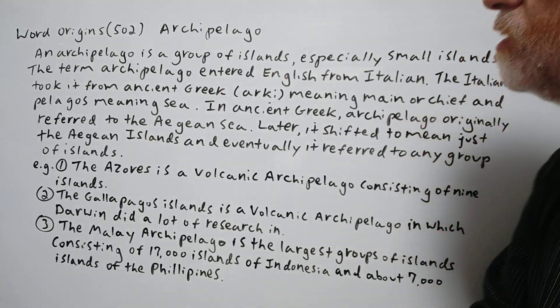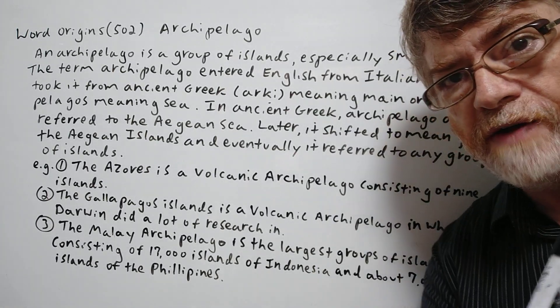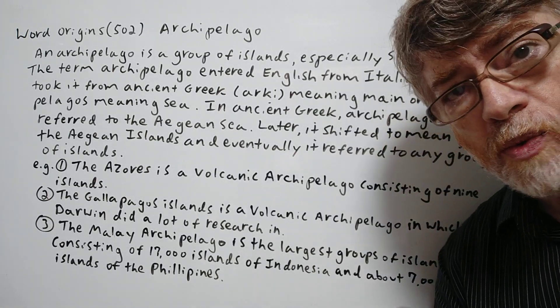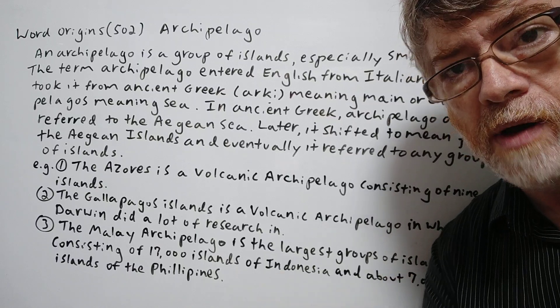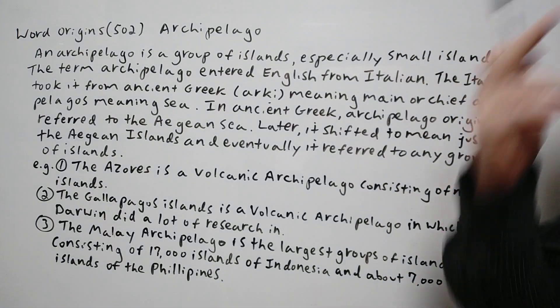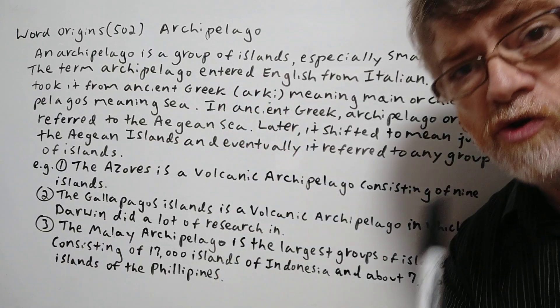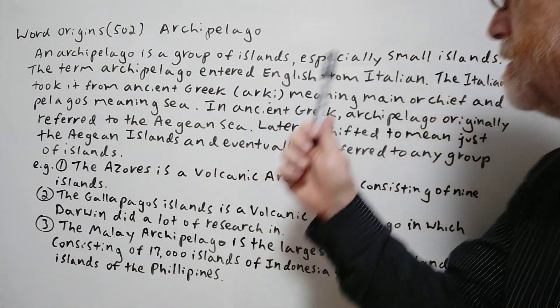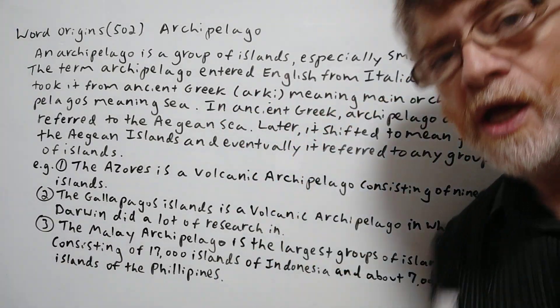Hi, this is Tutor Nick P and this is Word Origins 502. Word Origins today is archipelago. An archipelago is a group of islands, especially small islands.